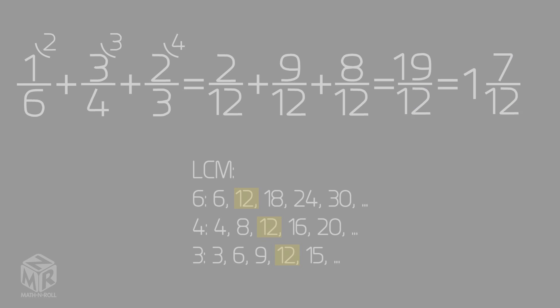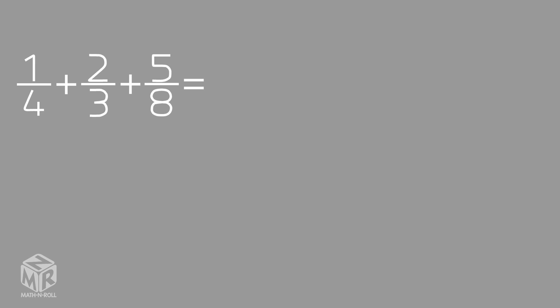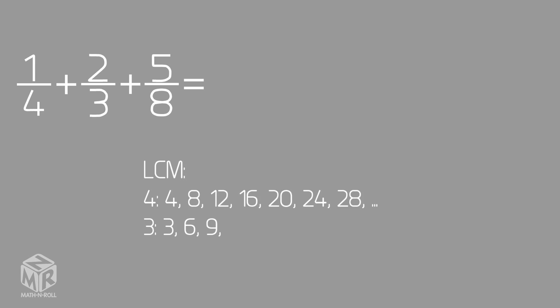Let's try another example: 1 fourth plus 2 thirds plus 5 eighths. First, we find the least common multiple. We write down the multiples of 4, 3, and 8. The least common multiple is 24.